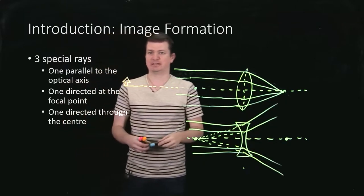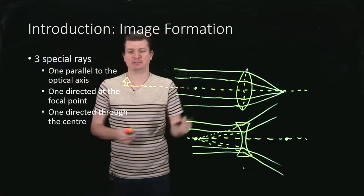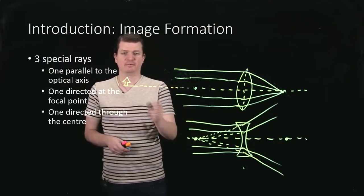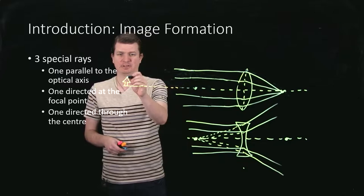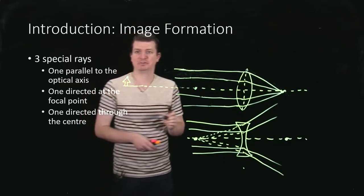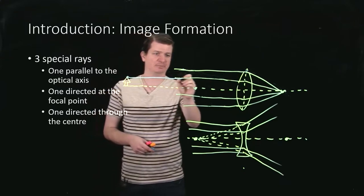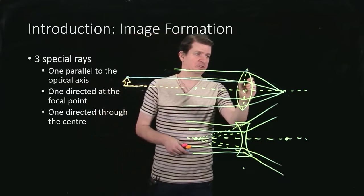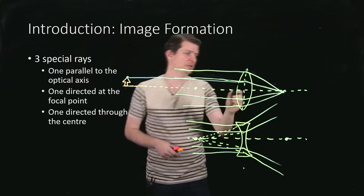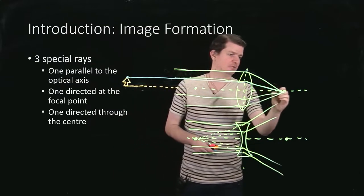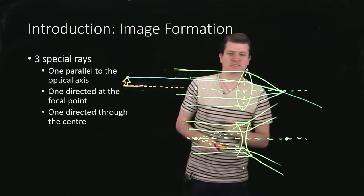There are three special rays that will guide us in determining what the image looks like. The first is, let's say we're looking at where the top of the tree ends up. The first special ray we draw is one that's parallel to the optical axis because by definition we know that will go through to the focal point and then just keep going.